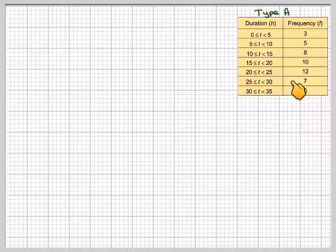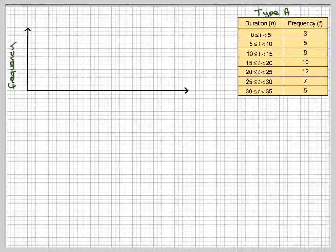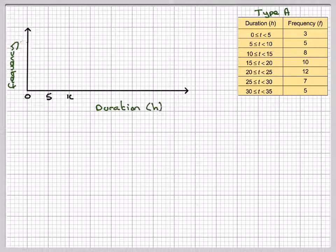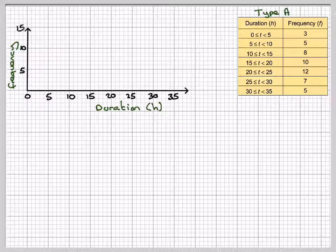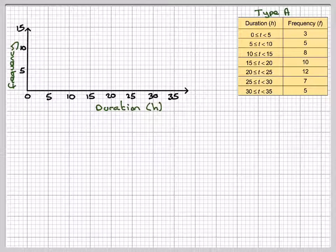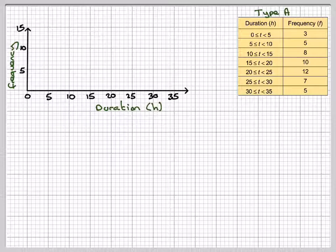Here's the data for type A. We'll draw a set of axes. The frequency goes up the side. For a frequency histogram for IB, the height of the bar is the same as the frequency.